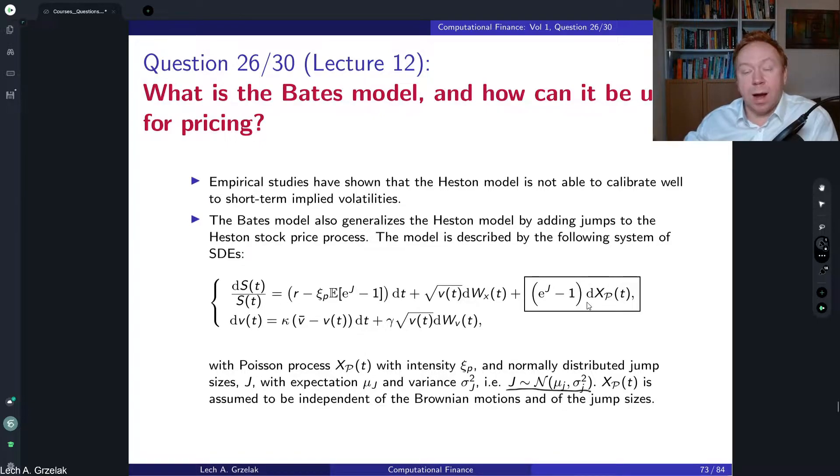So the Poisson process determines whether the event happens or doesn't happen, and then we have the magnitude of the jump event. Some jumps can be small, some jumps can be large, and this part tells us about when the jump would happen. So we have a product of the two. This jump part is independent of the Poisson process. So in the Bates model, the jump add-on is uncorrelated with Brownian motion—it's basically just an independent jump component that is added on top of the Heston model.